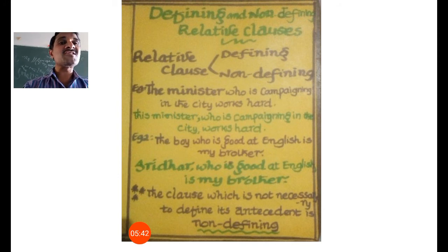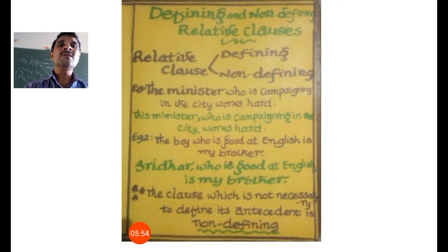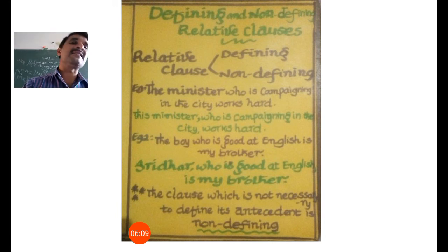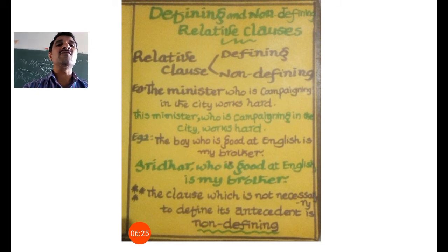In the second sentence: 'This minister who is campaigning in the city works hard.' Here 'this minister' — the identity is already clear. We know which minister we are talking about. So 'who is campaigning in the city' is absolutely additional information about this minister. Remove it and read: 'This minister works hard.' That's enough. So here the relative clause is giving additional information by joining 'who is campaigning in the city.'